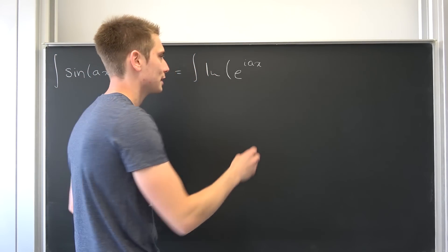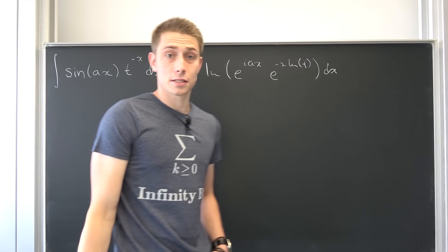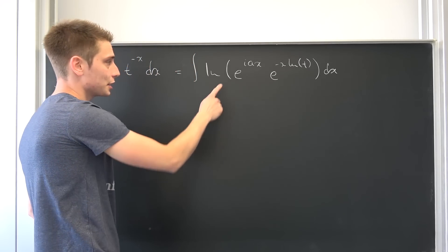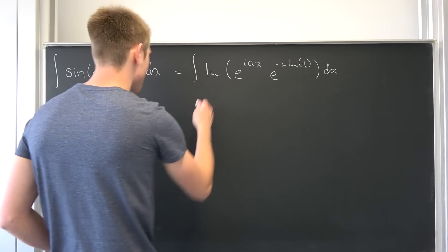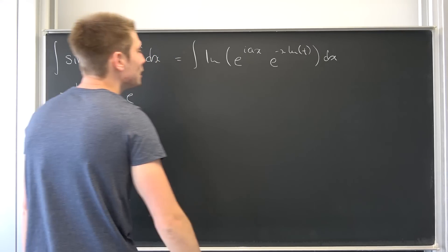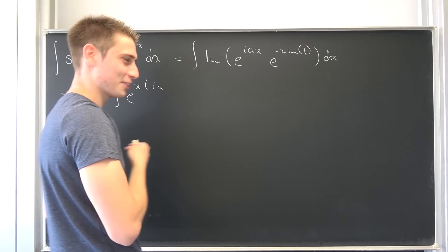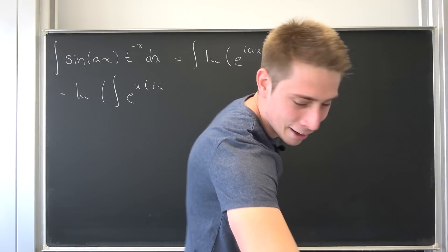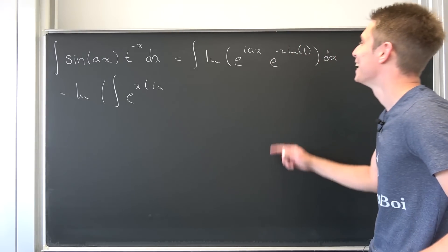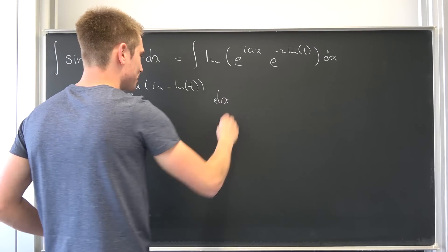So that's the imaginary part of e to the i·a·x, and then t to the negative x is nothing but e to the natural log of t times negative x, okay, so e to the negative x · natural log(t) dx. Here we are in the real numbers. The real numbers form a Banach lattice, and in a Banach lattice you can actually interchange real operators however you want. So let's interchange the imaginary part and the integral to get the imaginary part of the integral of e to the — we can bring this together — x times (i·a minus natural log(t)) dx.